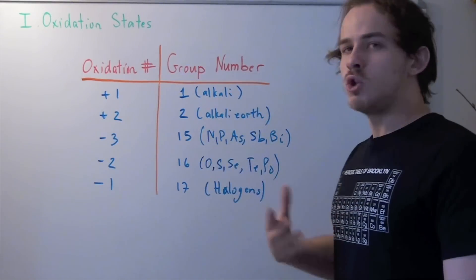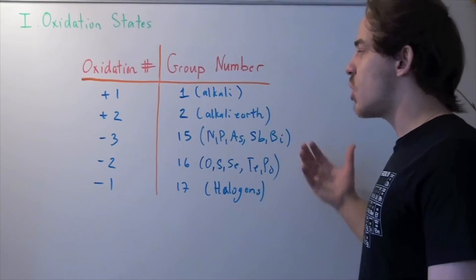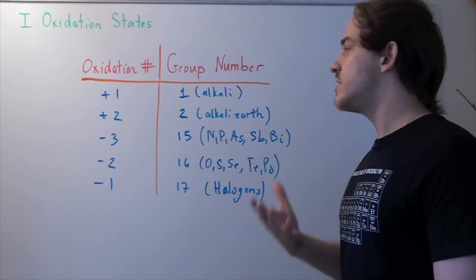Group number 15, including nitrogen, phosphorus, and so on, are assigned an oxidation state of negative three.